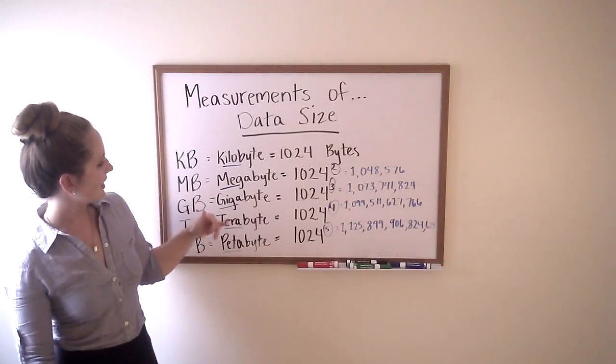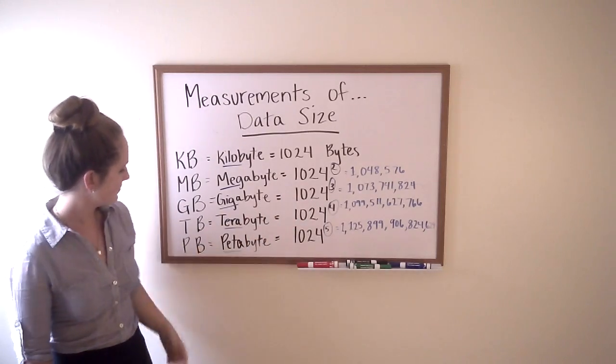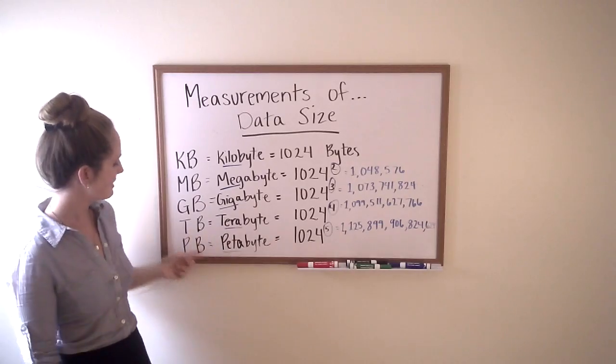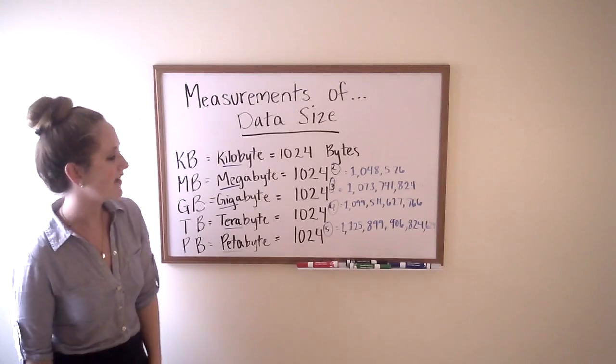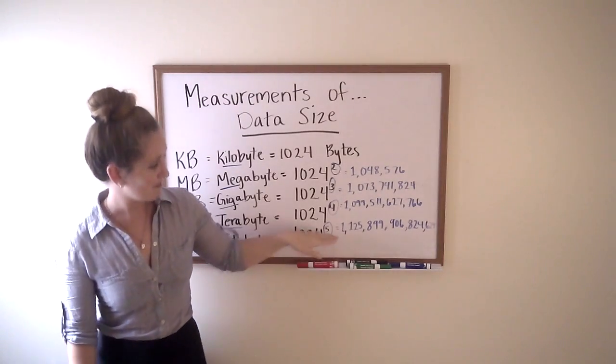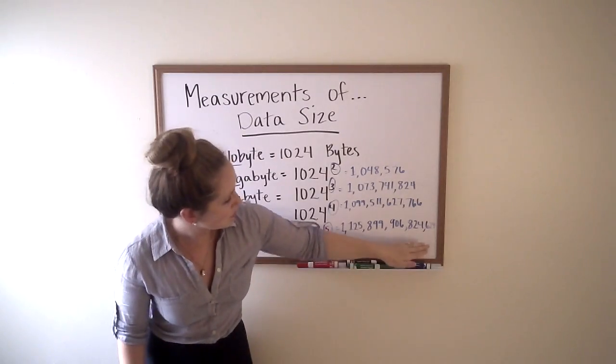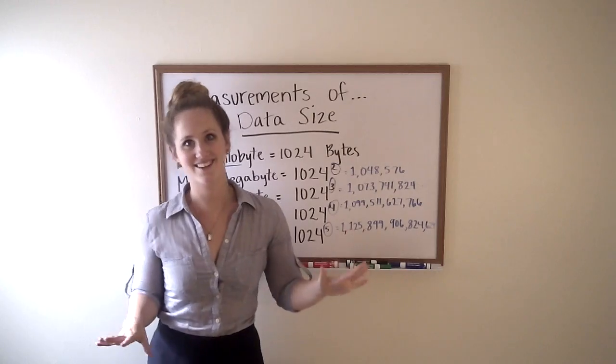After megabyte, we've got gigabyte, also known as GB, which is 1024 to the power of three, then TB, terabyte, 1024 to the power of four, and PB, not peanut butter, it is petabyte, 1024 to the power of five. Just to give you an idea of how big this number is, I almost ran out of room writing this on my whiteboard. These are some pretty big numbers we're dealing with here.